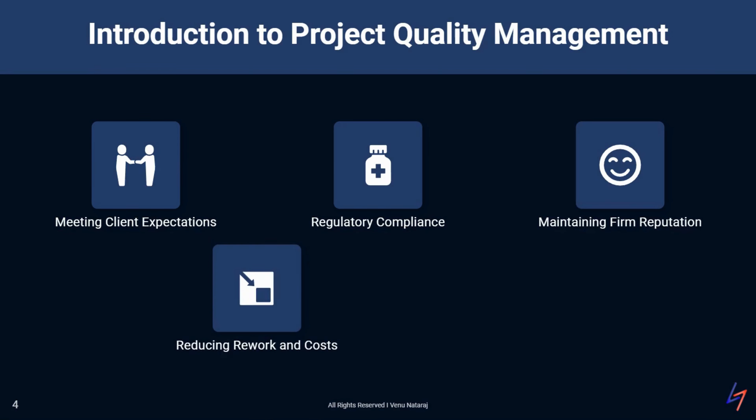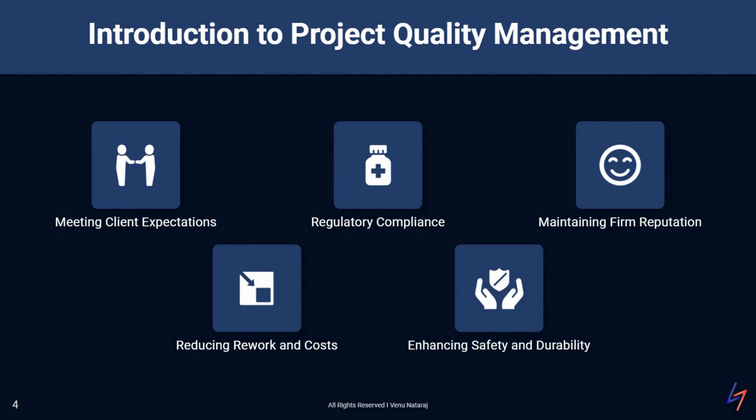Fourth, quality management reduces rework and associated costs. By getting things right the first time, we can avoid costly reworks, delays and material wastage. This not only improves the project's bottom line, but also enhances overall efficiency. Lastly, it enhances the safety and durability of the built environment. Quality management in construction isn't just about aesthetics — it's about ensuring that what we build is safe, functional and built to last. This is our ultimate responsibility as construction professionals.